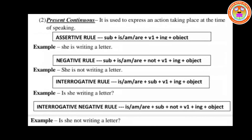Next we have present continuous. Continuous means the action is going on — it is used to express an action taking place at the time of speaking and is continuing. For the assertive affirmative form: Subject + is/am/are + V1 in ING form + object. The verb 'to be' is conjugated according to the subject pronouns. Example: 'She is writing a letter.'